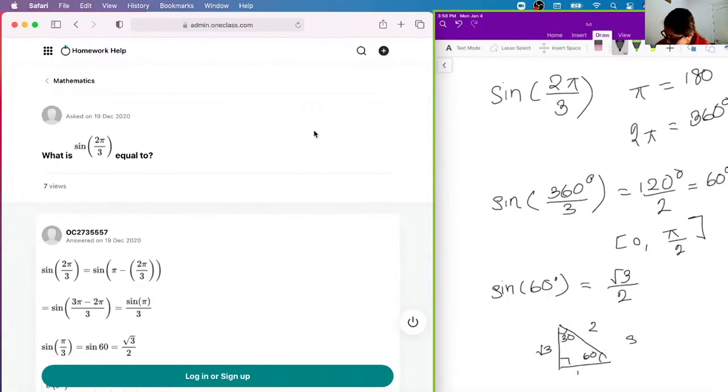And so sine, 60, is root 3 over 2. Okay? And so sine of 60 is basically 4 to that.